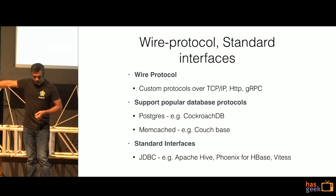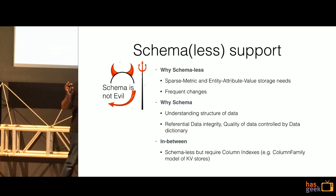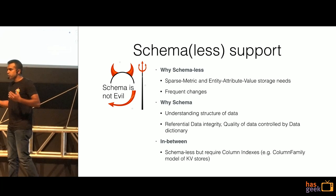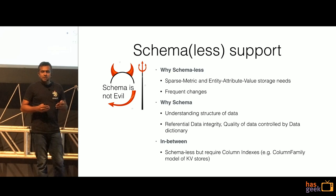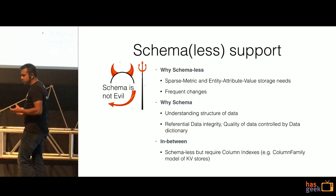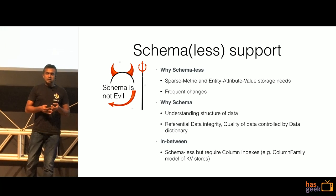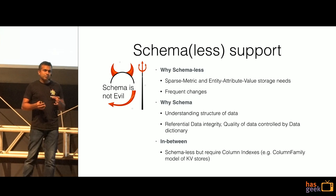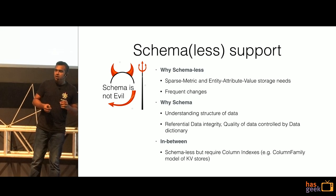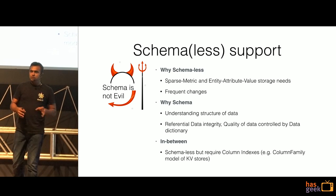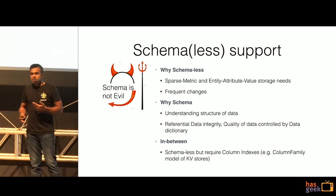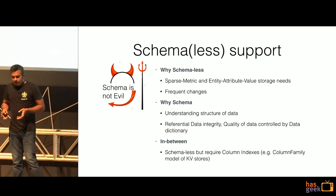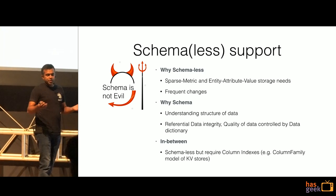On schema — I sometimes hear "schema is evil." My system is not able to scale because it is relational, very schema-defined, and therefore it's a problem. But the truth is, if you really look at the number of systems that really need schema-less backends, you can count them — they are very few. Either they are sparse metrics or you're trying to build entity-attribute-value storage. Like we started off in Flipkart — our catalog used to store a diaper and an iPhone 6 on the same catalog system, we started off with an EAV store. But that couldn't scale and later we built something else.